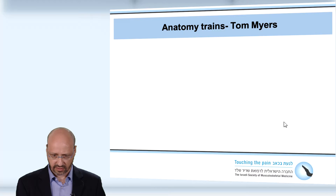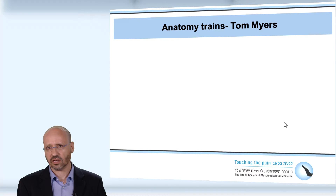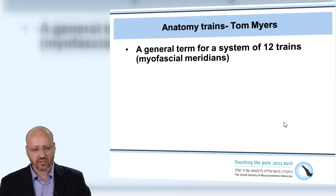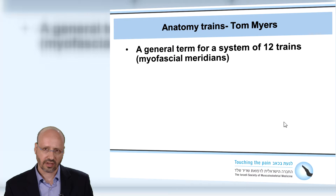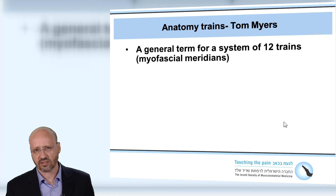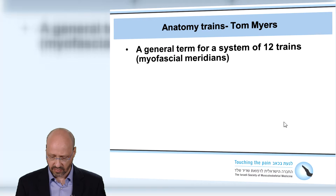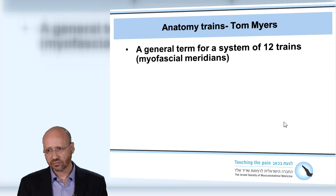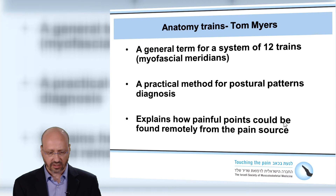He coined the term anatomy trains. He went and dissected cadaver bodies to see whether there are any connections between the soft tissues. This is a general term for describing a system of 12 trains, also coined and named myofascial meridians. As Professor Feinstein mentioned earlier, it in a way recalls the 12 meridians of Chinese medicine, and amazingly there is about 70 to 80% similarity between those meridians — remarkable given that Chinese people identified those meridians 2,000 to 3,000 years ago.